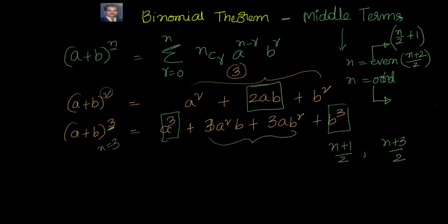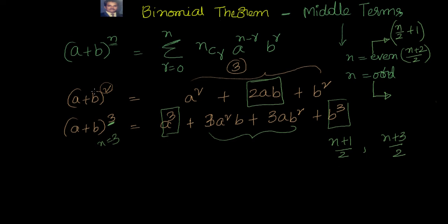So to summarize: if n is even, (n+2)/2 gives the middle term position. If n is odd, then (n+1)/2 and (n+3)/2 give the two middle term positions. Let's go ahead and do some examples based on that.